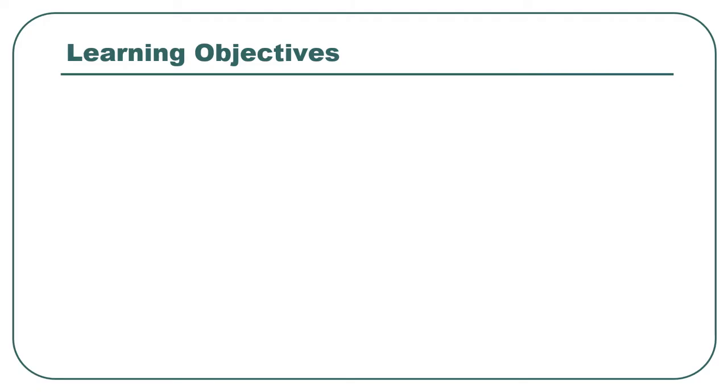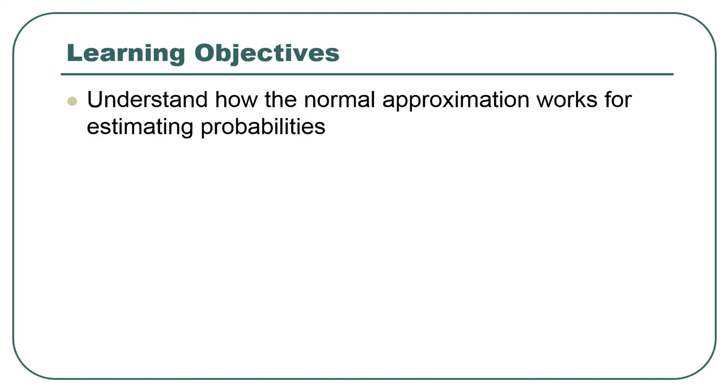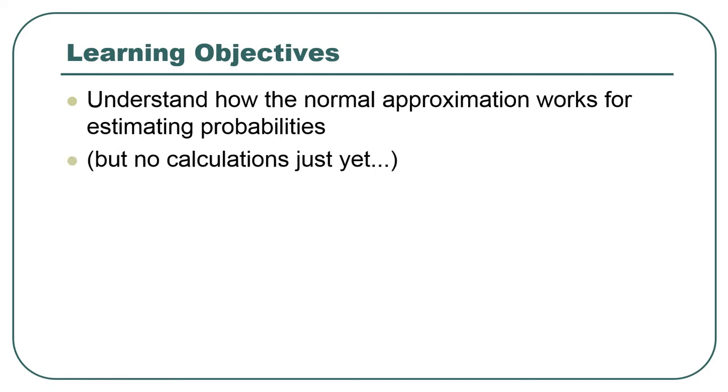The normal approximation is when we apply the normal distribution to real data that's not actually normal, because nothing is perfectly normal. But you need to understand how it works when we apply it, how that process works, not a ton of the details, but conceptually what we're doing when we apply that to estimate probabilities. And then you need to understand the consequences of that if we screw up.